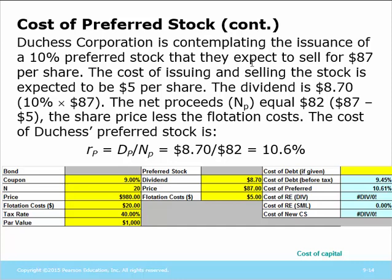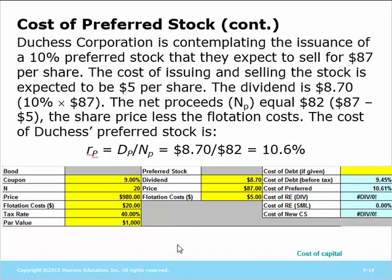The ultimate cost of this preferred stock is 10.67%. The par value of this stock is actually $87. The current selling price doesn't have to equal the par value, although it could. When we enter the data into the preferred stock section — $8.70 dividend, $87 price, $5 flotation costs — the cost of preferred calculates to 10.61%. There's no tax implication for dividends or issuing preferred stock, so the before-tax cost of preferred equals the after-tax cost.